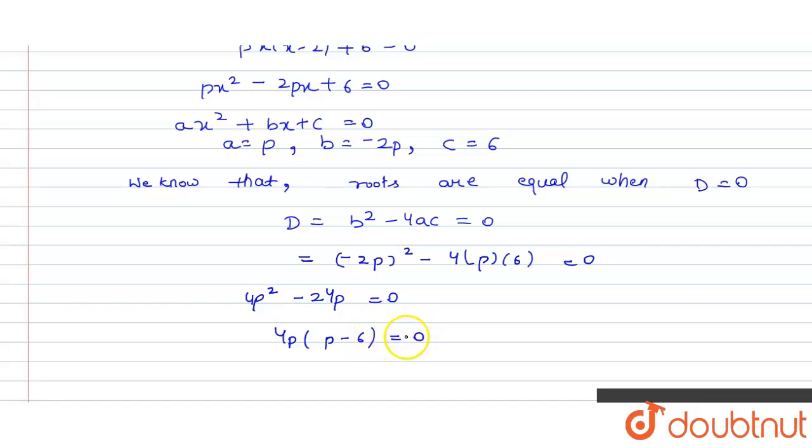And it will be equal to 0. Here, we will get 2 conditions: 4P equals 0 or P minus 6 equals 0.